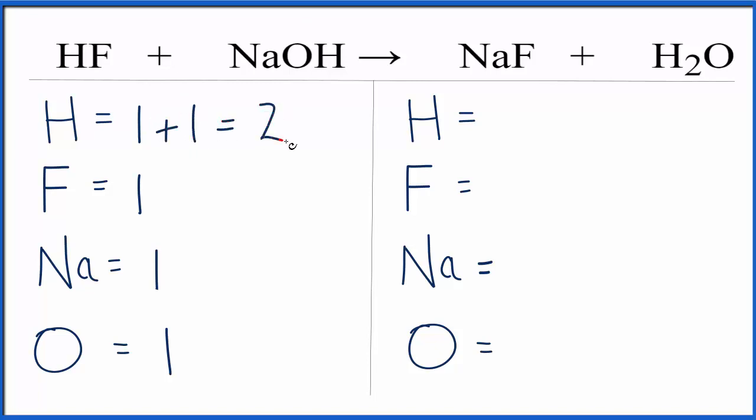That'll give us two hydrogens. That's a common mistake people make. Over on the product side, hydrogens, we have two of those, fluorines one, sodium one, oxygen one, and you can see from these numbers that this equation is already balanced.